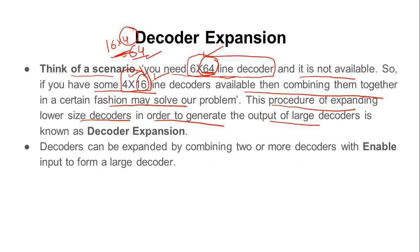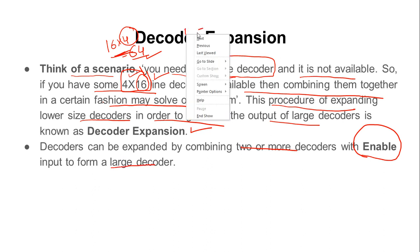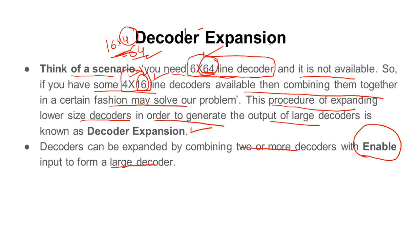This procedure of expanding lower-size decoders to generate the output of larger decoders is called decoder expansion. Decoders can be expanded by combining two or more decoders with enable input. In decoder expansion, the enable plays a vital role, which we will understand in the next slide.